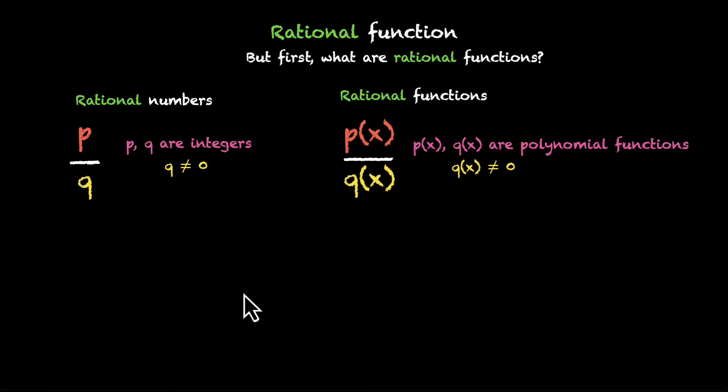So now that we have defined what rational functions are, let's take an example and try drawing its graph. So here's an example. We have a function f from R-{0}. Here 0 is not included in the domain. R-{0} to R defined by y equals f(x) equals 1 by x.